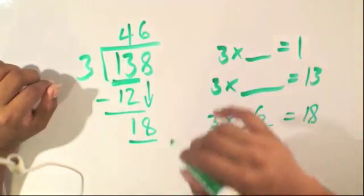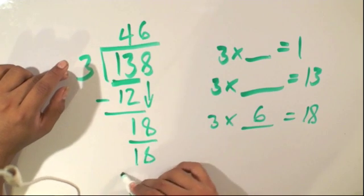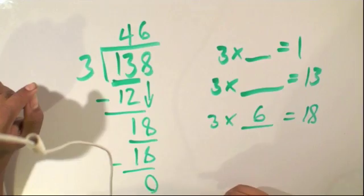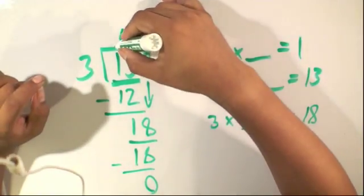So, we'll write the 6 on top of the 8, and we'll multiply 6 times 3, which is 18, and we are left with a remainder 0. So, our overall answer is 46.